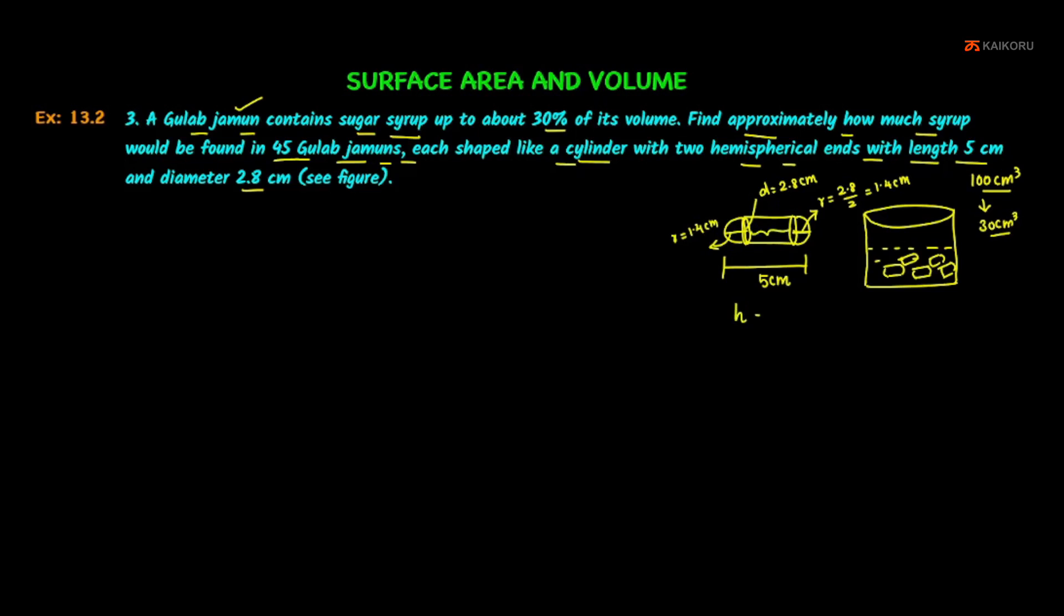Height of the cylinder equals total length minus both sides' radius, that is 1.4 plus 1.4. So that equals 5 minus 2.8, which equals 2.2 cm. This is the height of the cylinder.